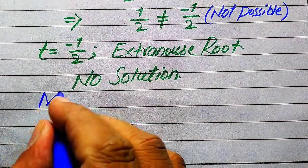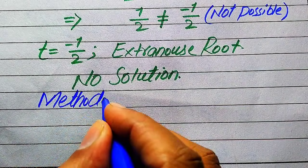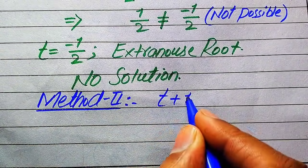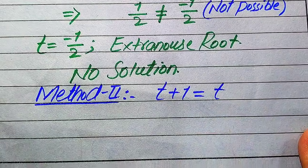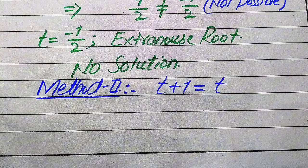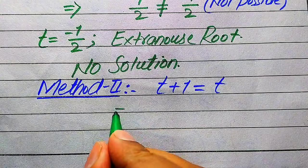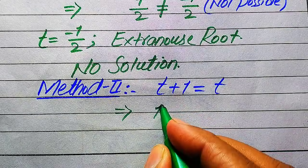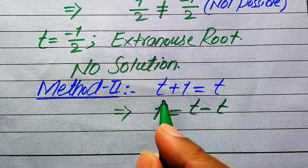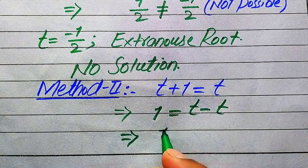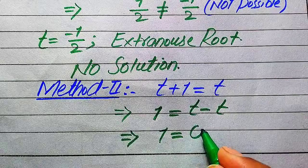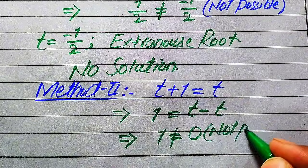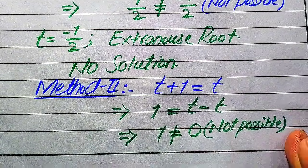Now we again solve this problem using the second method. In the second method we copy down the given question statement: √(t+1) equals √t. The second method is a very quick or direct method, where we directly conclude about the solution of this problem. We move √t to the right hand side, so it becomes 1 equals √t minus √t. The positive √t when moved to the right hand side becomes negative, and we get 1 equals 0. You can see that 1 is not equal to 0 — in general we say it is not possible that 1 equals 0.